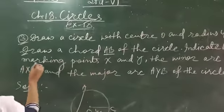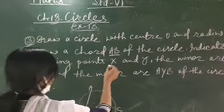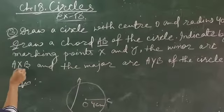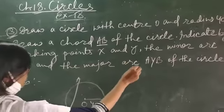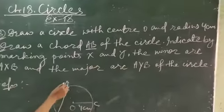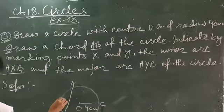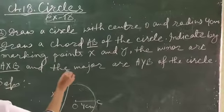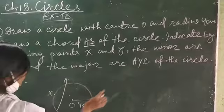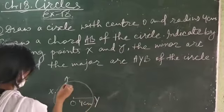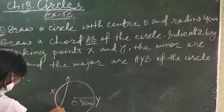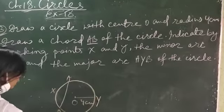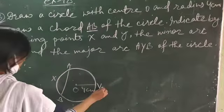Now you have to draw an arc, marking points X and Y. The minor arc AXB and the major arc AYB. AXB is the minor arc, so this one is the X. And the major arc is AYB, so right here Y. So this one is the minor arc AXB, and this one is the major arc of this circle, which is AYB.